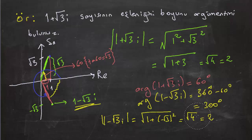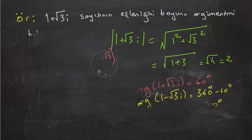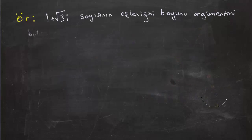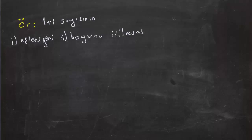Peki şimdi başka bir örnek yapalım. 1 artı i sayısının eşleniğinin boyunu, esas argümentini bulunuz. Soruyu biraz zorlaştırabiliriz. Şöyle yapsak belki biraz daha zor bir soru haline gelir. 1 artı i değil de bunu eksi 1 eksi i yapalım arkadaşlar.